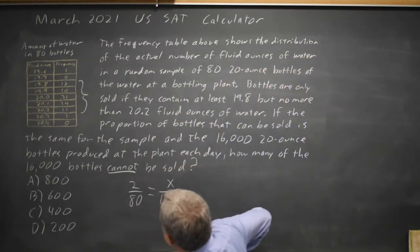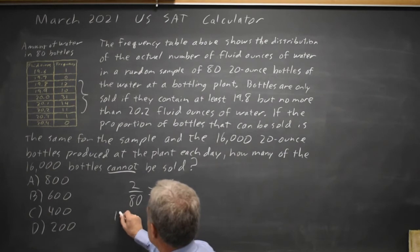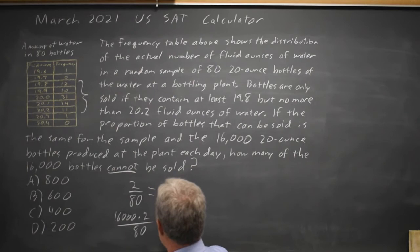If I multiply both sides of this equation by 16,000, I get 16,000 times 2 over 80 equals X.